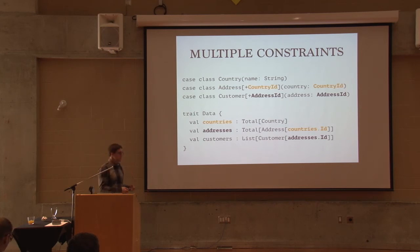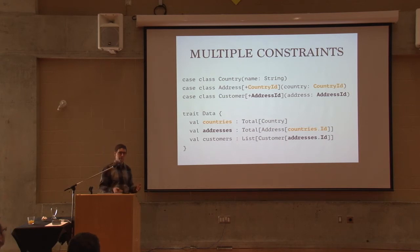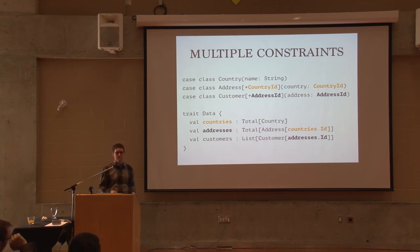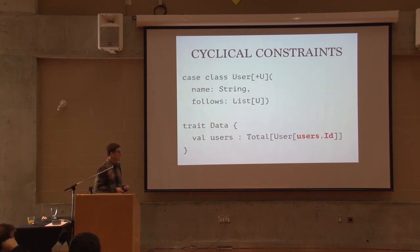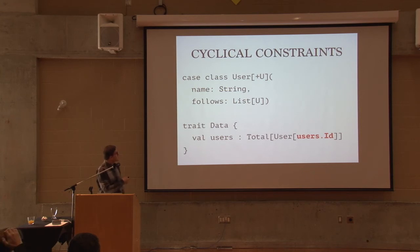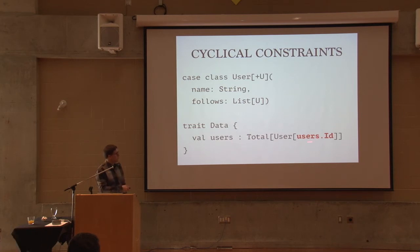You might wonder whether this addresses all types of foreign keys you can put in place in a relational database. Like this, it doesn't. One problem is cyclical constraints — as soon as you have a cycle, the users collection is a total map that wants to reference its own ID, and that doesn't work.